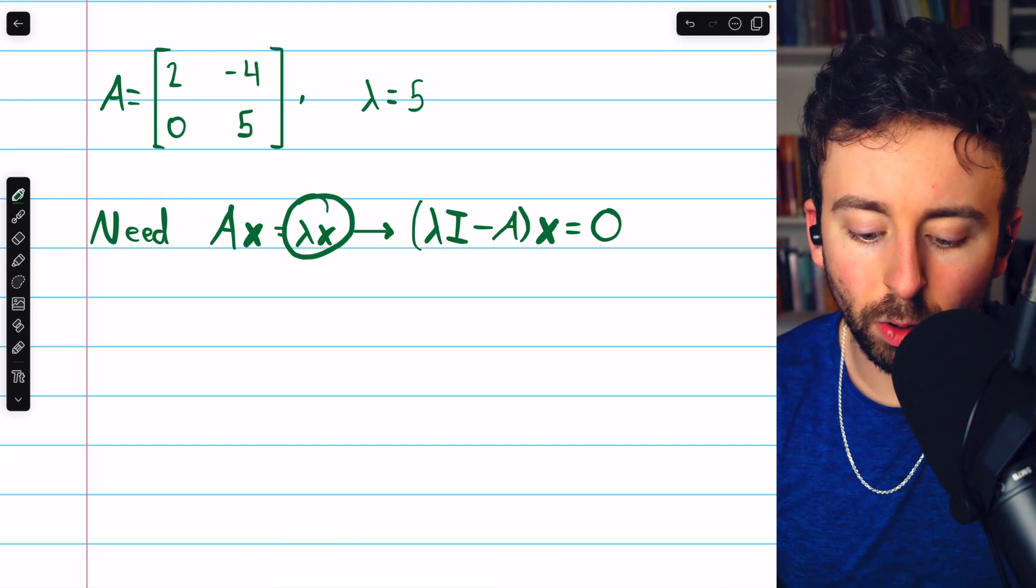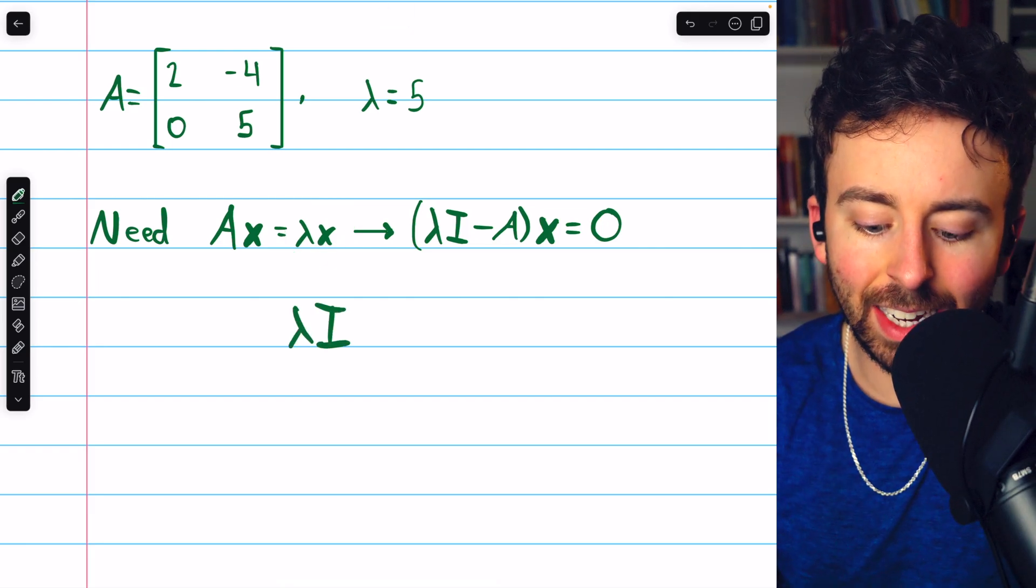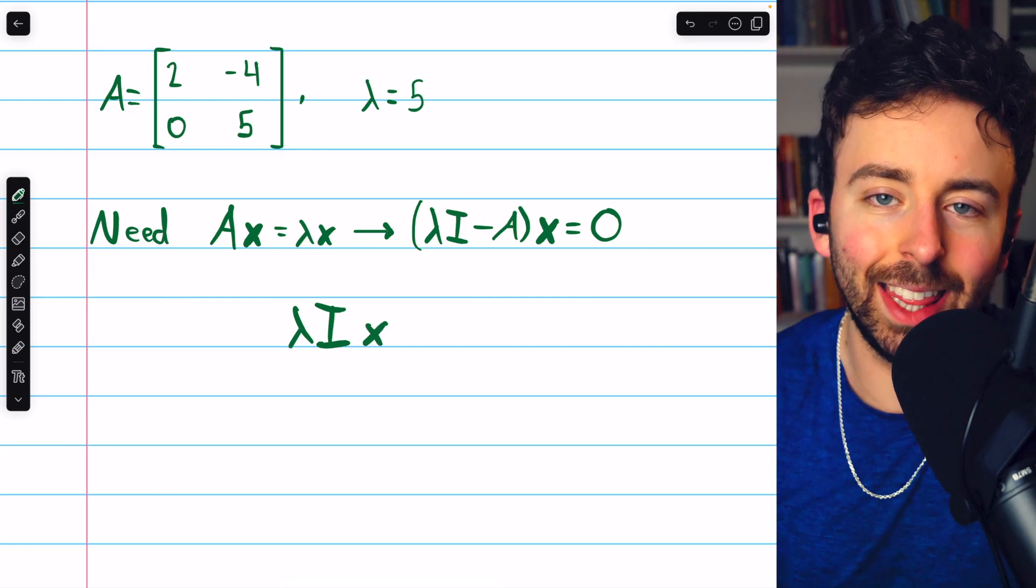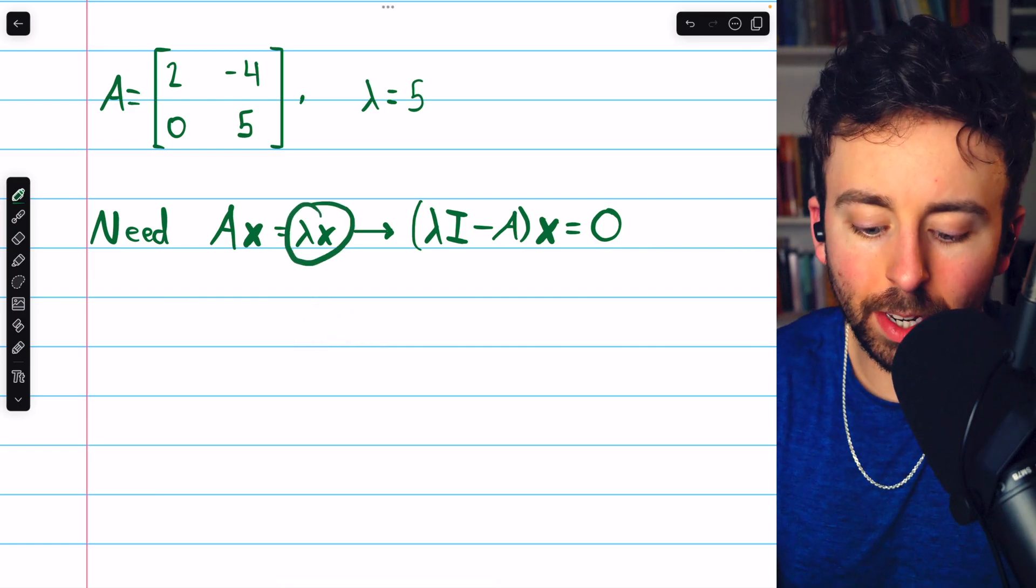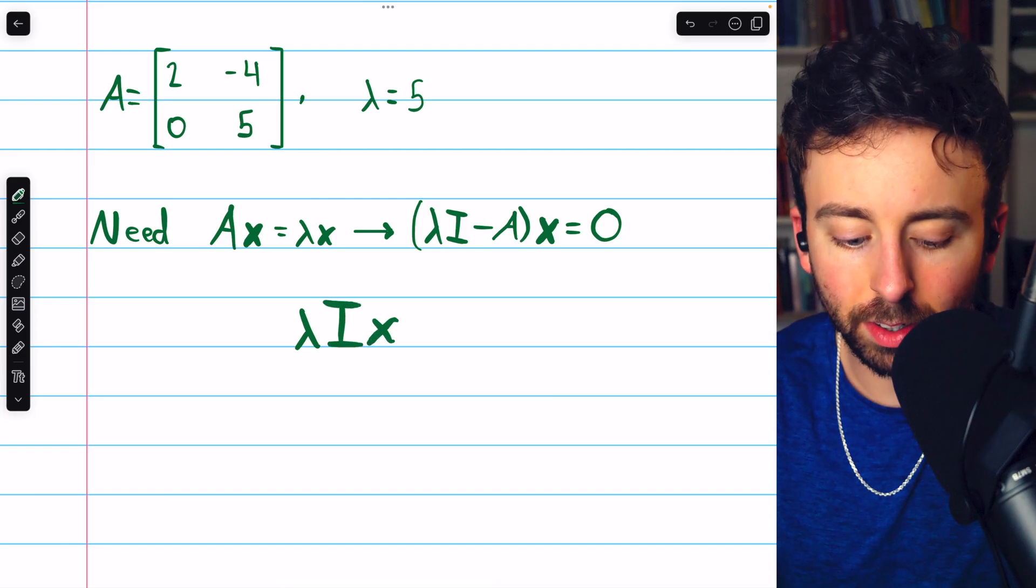Lambda times x, we can write that as matrix multiplication by multiplying the identity by lambda and then multiplying that by x. Lambda times x is the same as lambda times the identity matrix times x.